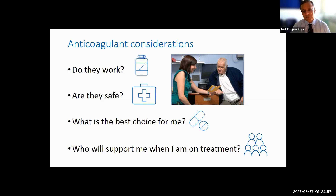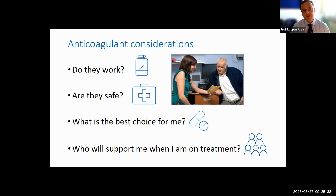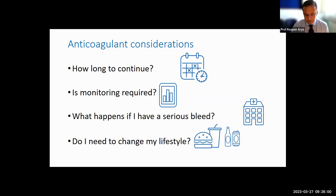The best choice of anticoagulant depends on several factors: the reason for anticoagulation, your age, weight, any other illnesses, your renal function, and what is most convenient for you. These options should be fully discussed and agreed with you. It is also important to know who will support you on treatment — usually the anticoagulation clinic team comprising doctors, nurses, and pharmacists, who advise, monitor (particularly for warfarin patients), and respond to any issues that might arise.